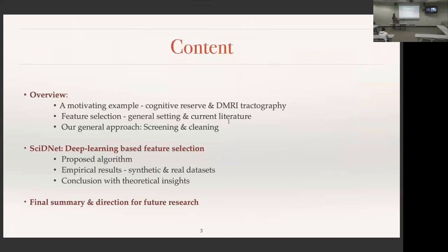This is the basic outline of my talk. I'll be starting with a motivating example using DMI tractography data and a cognitive reserve prototype. Then I will talk about the WeThought statistical framework — feature selection, its general setting and current literature. Having set that stage, I will propose our approach: this screening and cleaning-based methodology, and then the method CITINET that we developed. I will discuss the algorithm and show empirical results in both synthetic and real data, and conclude with some theoretical justification.